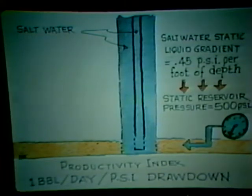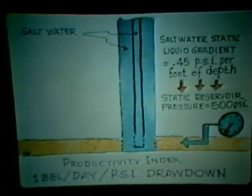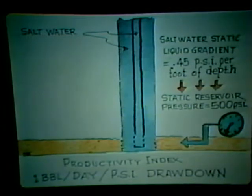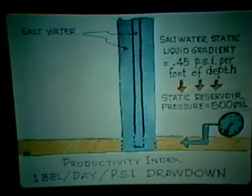Also, this 1,000 foot well has a static reservoir pressure at the producing sand equal to 500 psi. The well has a productivity index of one barrel per day per psi drawdown — that is, for each psi that the pressure is reduced at the bottom of the hole, one barrel per day of salt water will be produced.